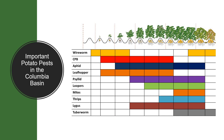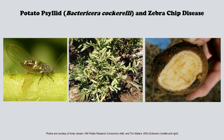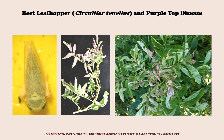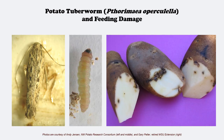Insect pest management is a good place for the potato decision aid system to start because insect pests can pose significant problems for potato crops, especially in the Columbia Basin, where growers may have to deal with at least 10 different insect pests over the course of a very long growing season. Many of these insects can cause substantial economic damage by spreading pathogens that cause diseases — like the potato psyllid shown here that can spread a bacterium causing zebra chip disease — or aphids that spread potato viruses, and beet leafhoppers that can spread a phytoplasma causing purple top disease. Many insects also cause damage by feeding directly on plants or tubers, like the potato tuber worm shown here.